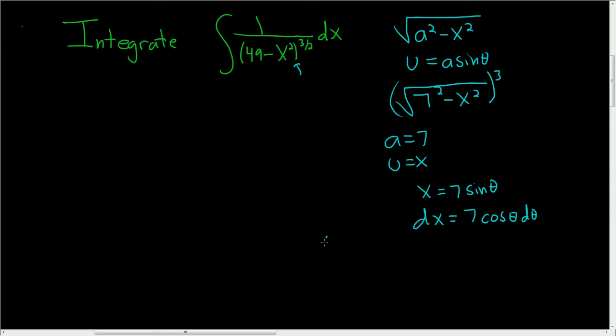It's 49 minus x squared. And we said we can write that as the square root cubed. So this is 49 minus, and we said x was 7 sine theta. So if we square the 7, we get 49. And if we square the sine function, we get sine squared.